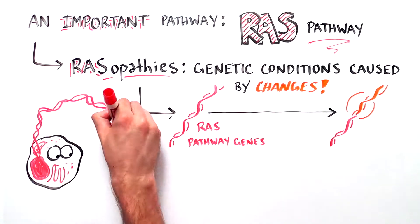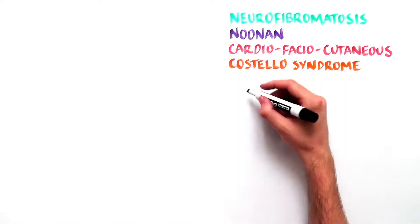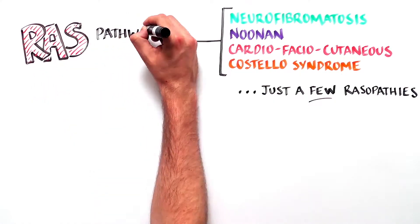Genes are the specific instructions, like a blueprint, for making proteins to do the specific job in cells. Neurofibromatosis, Noonan, Cardiofacial Cutaneous and Costello syndrome are just a few of the RASopathies. Each is caused by a problem in the RAS pathway.